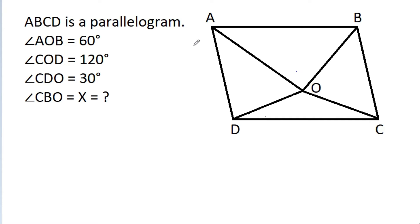In this video, we have given a parallelogram ABCD and angle AOB is 60 degrees, angle COD is 120 degrees, angle CDO is 30 degrees, and angle CBO is X and we have to find the value of X.